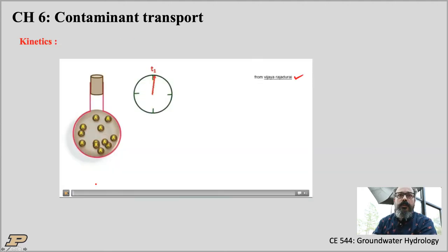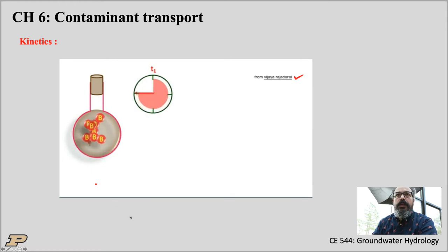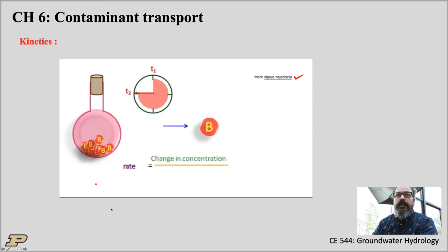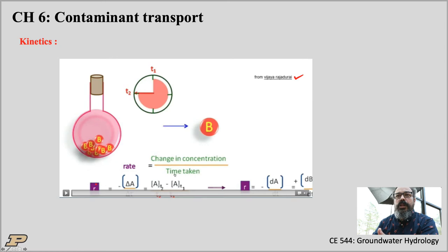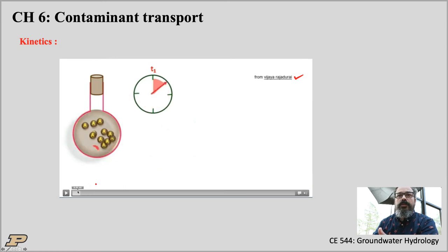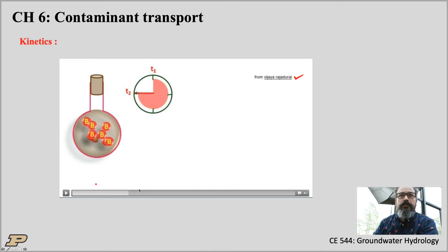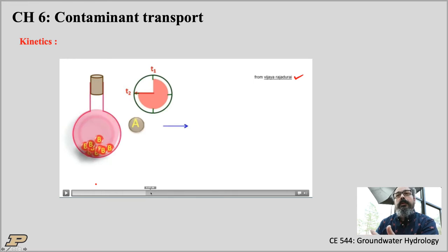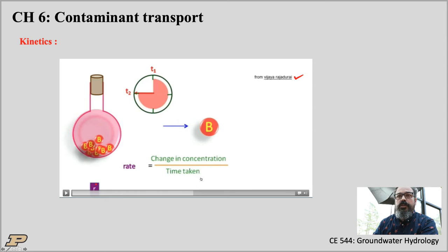Now getting into kinetics. You can see how A converts to B over time. There is a rate at which A changes to B — that rate is the change in concentration over the time taken. This is the velocity of the reaction: the change in concentration divided by the time. If you start with all A's at time zero, over time B shows up and the reactants decrease, until equilibrium is reached.